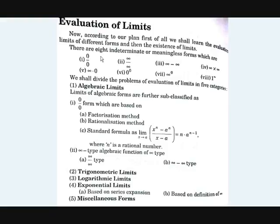First, there are 8 indeterminate or meaningless forms. They are 0/0, infinity/infinity, infinity minus infinity, infinity into infinity, infinity into 0, 0 to the power 0, infinity to the power 0, and lastly 1 to the power infinity. As you can see, these are all not determined.